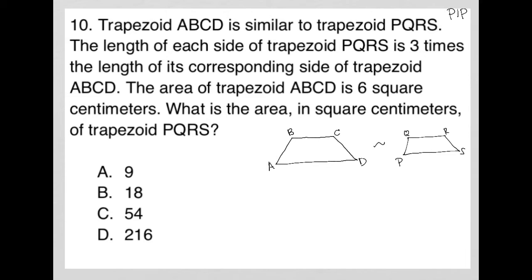The length of each side of trapezoid PQRS is three times the length of the corresponding side of trapezoid ABCD. So actually PQRS should have been larger than ABCD, but that's perfectly fine.